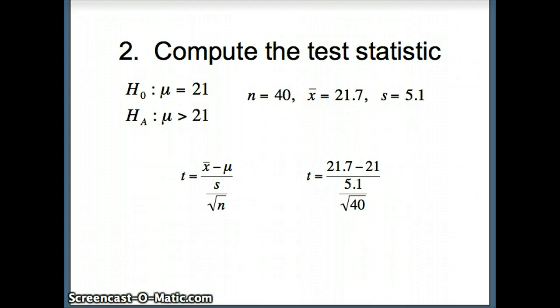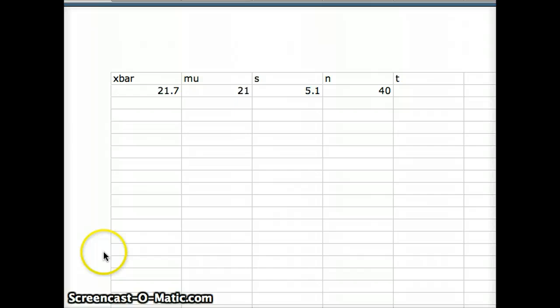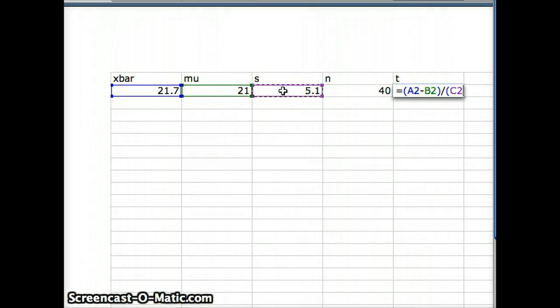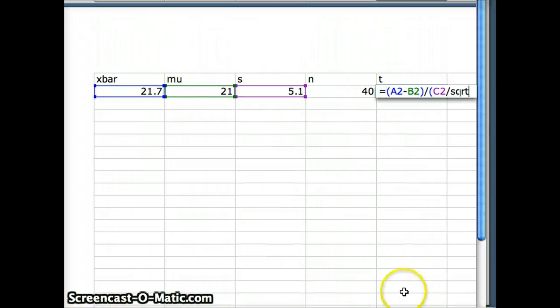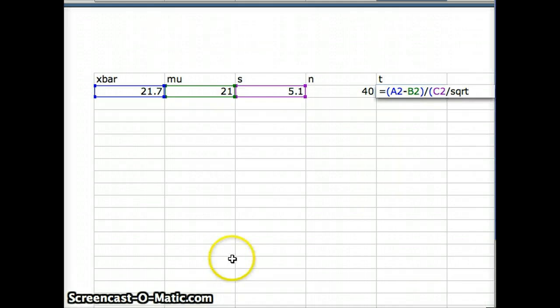We're going to compute this in Excel. I put in headers X bar, mu, s, n, and t, and the numbers underneath. I'll write a line of code: t equals X bar minus mu divided by s divided by the square root of n. That gives us 0.868, which is our test statistic.